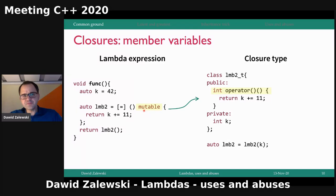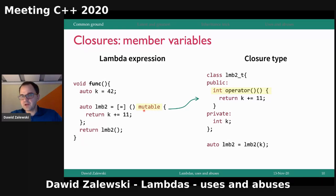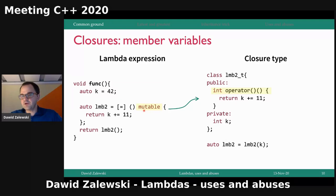So this is the common ground about Lambdas. The most important takeaway is that Lambdas give rise to closures. Always when you have a Lambda, the compiler generates a unique closure type. For every single Lambda, a single unique closure type.